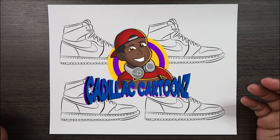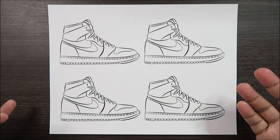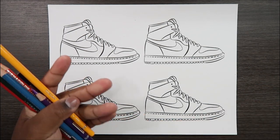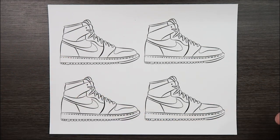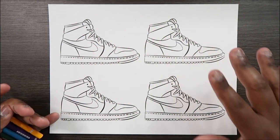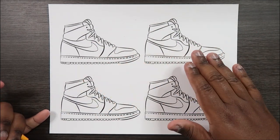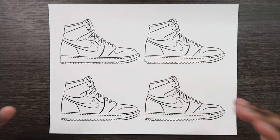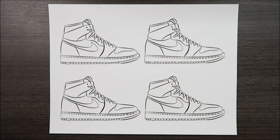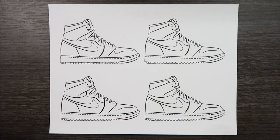Welcome back to Cadillac Cartoons. Today we're going to talk about how to develop the different colors you see in an illustration, photograph, design, or whatever. To do this I'll be using a little color testing sheet with several pictures of the Jordan 1's. Throughout the video I'll give each of these Jordans a different color and explain the different methods for developing a color scheme for illustrations, designs, photos, or whatever it is you create.